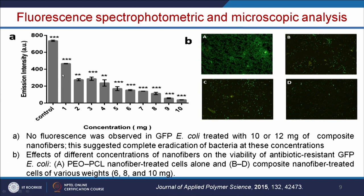As every experiment should be repeated 3 to 5 times, you take the average and make the standard deviation error bar. The stars on top indicate statistical analysis — more stars means your data is more statistically significant. You can see the control has more bacteria, and with respect to concentration of nanoparticles, the bacteria number is going down.